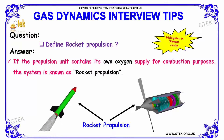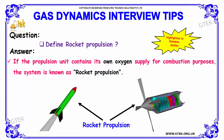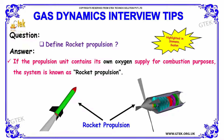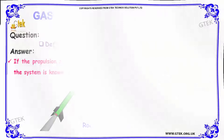Next question: define rocket propulsion. If the propulsion unit contains its own oxygen supply for combustion purposes, the system is known as rocket propulsion.